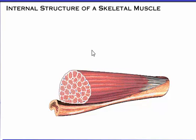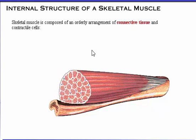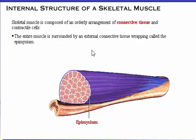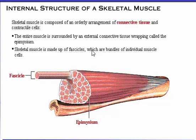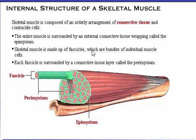Let's look at the internal structure of a skeletal muscle. A typical skeletal muscle is composed of an orderly arrangement of connective tissue and contractile cells. The entire muscle is surrounded by an external connective tissue wrapping called the epimysium. The skeletal muscle itself is made up of fascicles, which are bundles of individual muscle cells. Each fascicle is surrounded by a connective tissue layer called the perimysium.